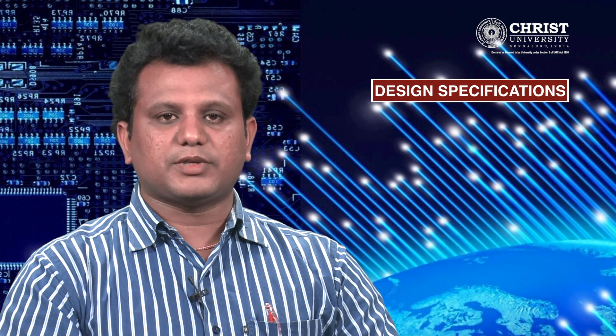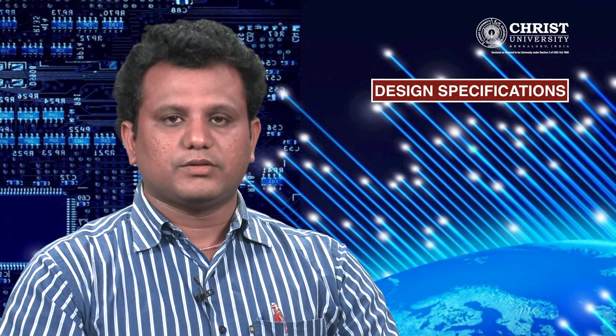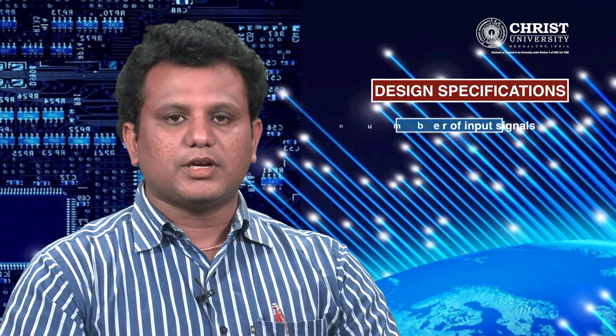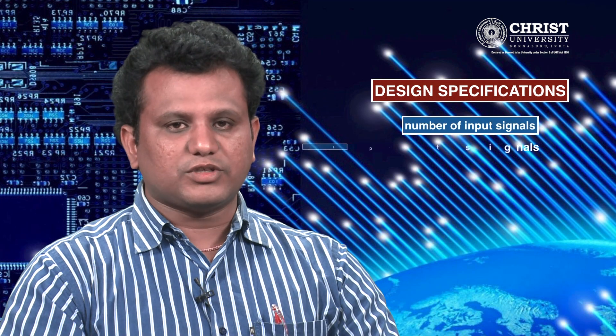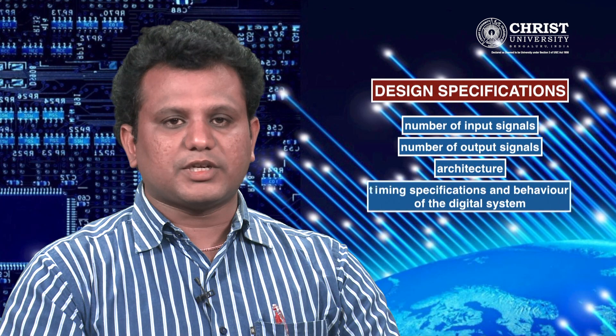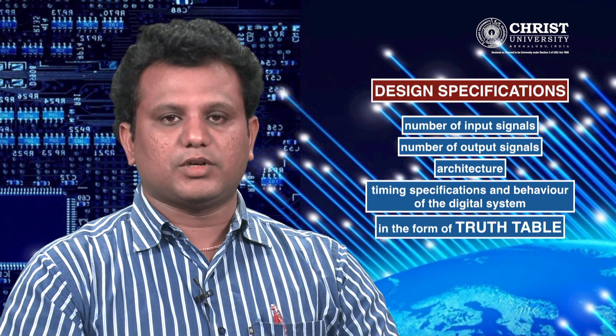The first stage in the flow chart of FPGA design flow is design specifications. In the design specification stage, design specifications of a design which is to be implemented on FPGA are captured. The design specifications would include number of input signals, number of output signals, architecture, timing specifications, and behavior of the digital system in the form of a truth table.